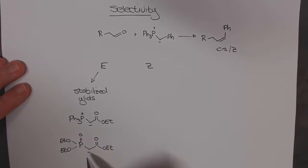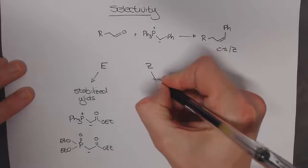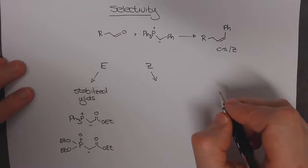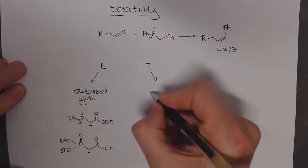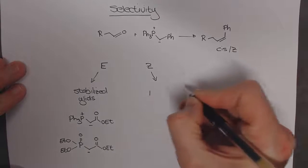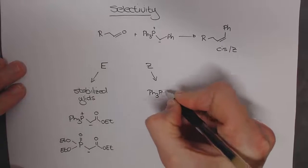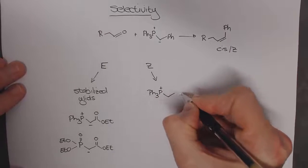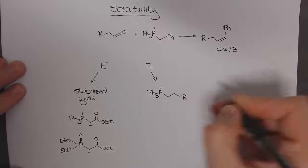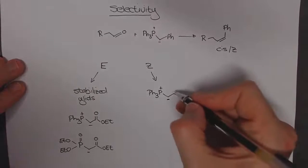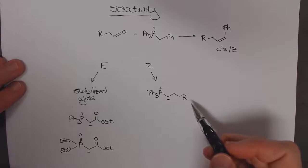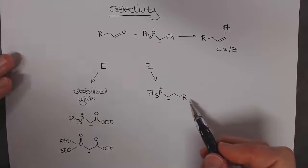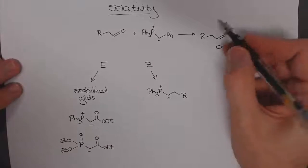It's very stabilized and will give E selective double bonds. For Z-selective double bonds, we're looking at the unstabilized ylids, which are essentially just the classic Wittig reagents that don't have any way else for the negative charge to delocalize. Some R group alkyl chain with a negative charge. There's no carbonyl next door, just hydrogens, and those would be your Z-selective Wittig reagents giving you the cis alkenes.